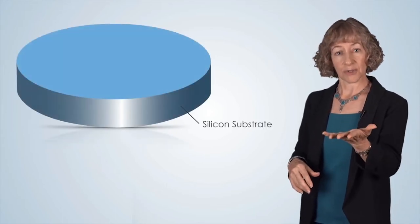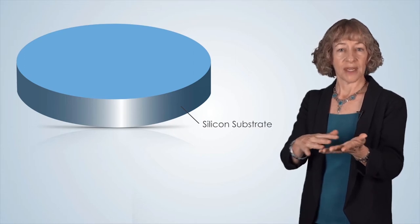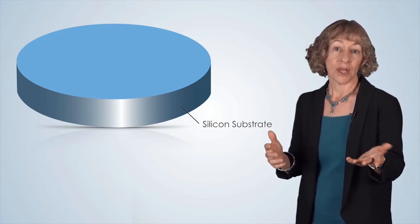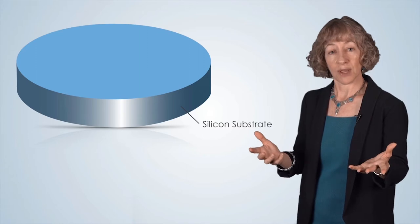Let's look at the process of EBL now in more detail. First, we select a substrate that we want to put a pattern onto. In the electronics industry, for example, we would start with a semiconductor wafer, such as silicon.